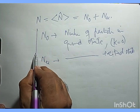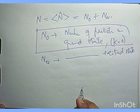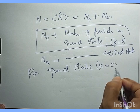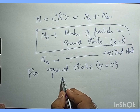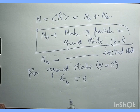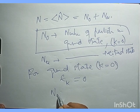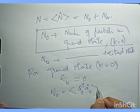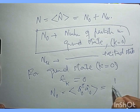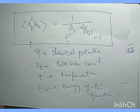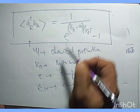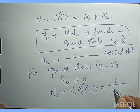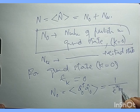For the ground state, k = 0, so ε_k = 0. The number of particles in the ground state, N₀ = ⟨a₀† a₀⟩, is therefore 1 / (e^{−μ/k_B T} − 1). Now let's look at this equation at some critical temperature.